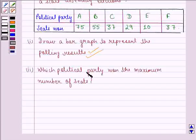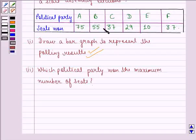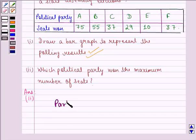Next question is which political party won the maximum number of seats? We see that the maximum number amongst all these is 75 and the political party that has won 75 seats is party A. So our answer to this second part is party A.